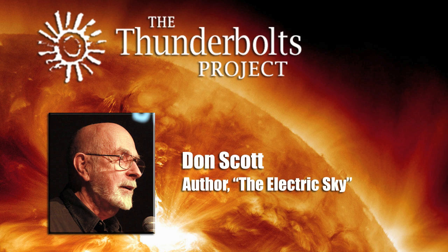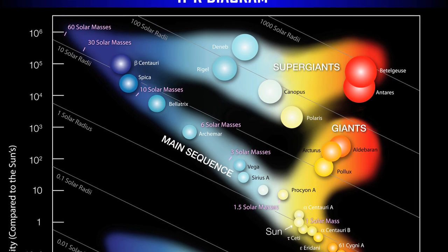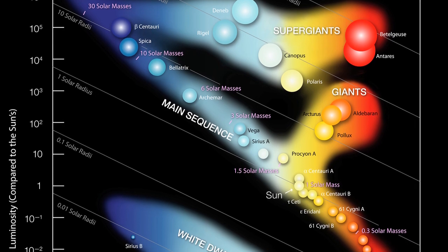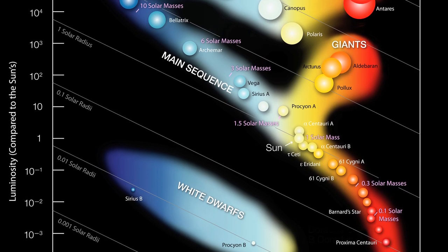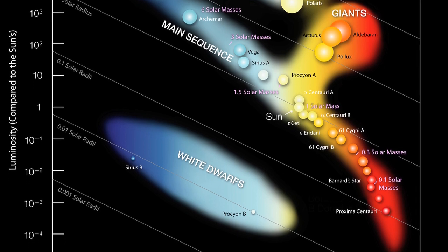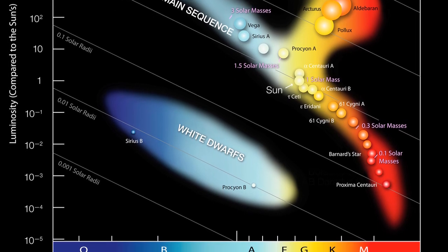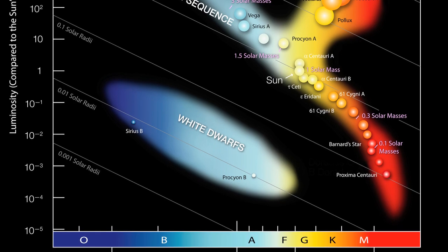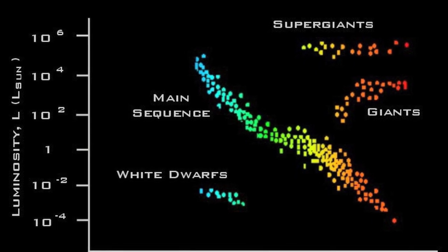What they use to describe stellar evolution is a plot called the Hertzsprung-Russell Diagram. The Hertzsprung-Russell Diagram is just a scatter plot — it's a set of points. Think of shooting a shotgun against the side of a barn — there are all the points. Each of those points represents a single star.